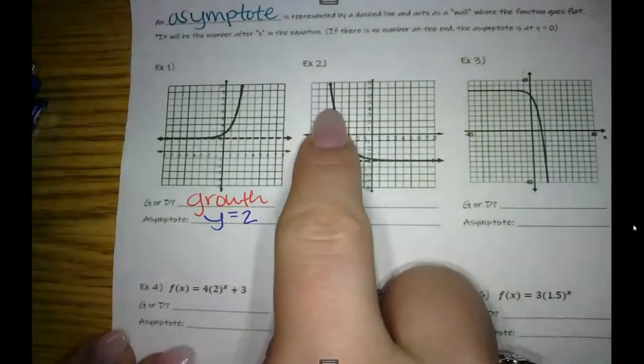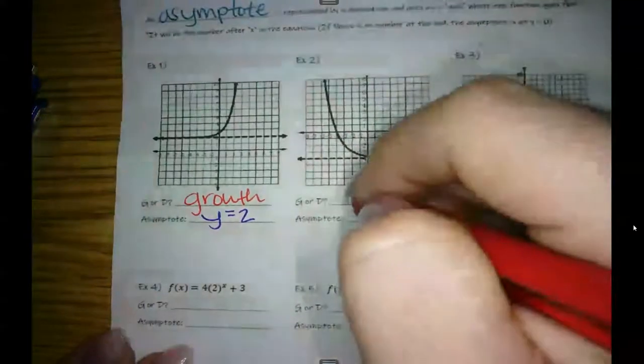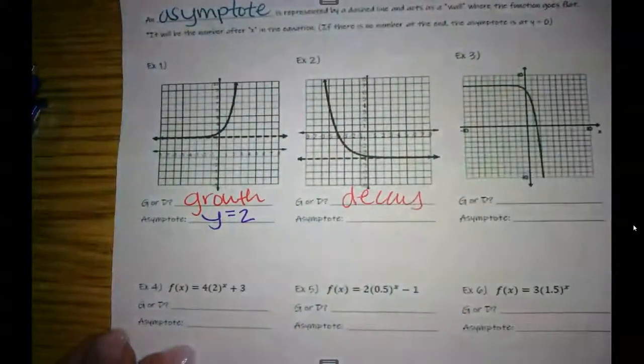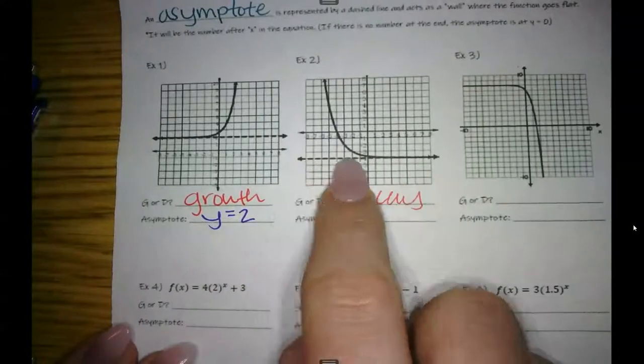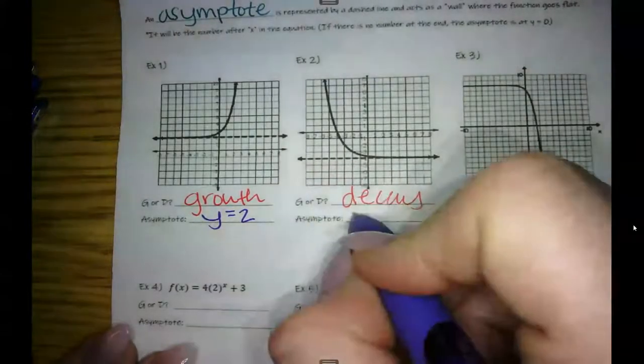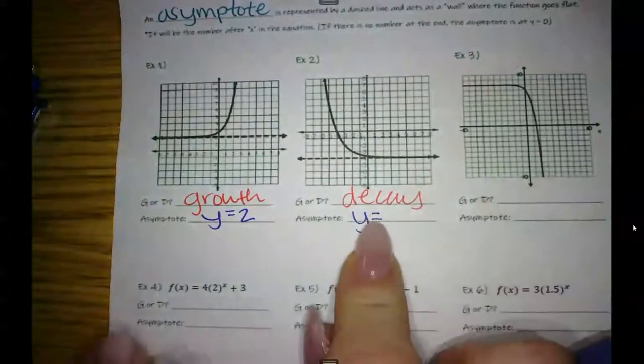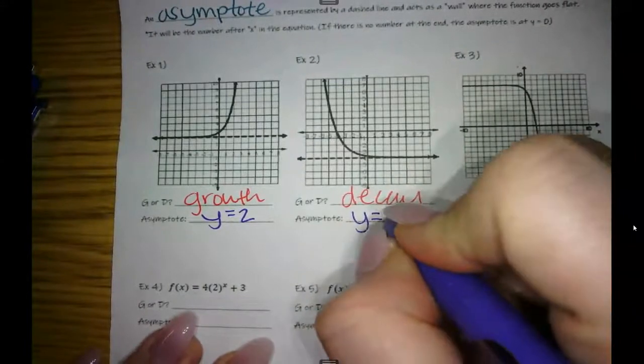Starting at the leftmost value, my finger's going down. So we've got a decay. Where is it bottoming out at? Again, y equals, always y equals. And that is at negative 4.